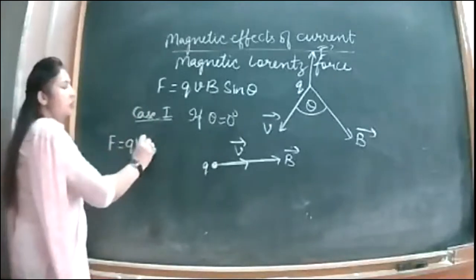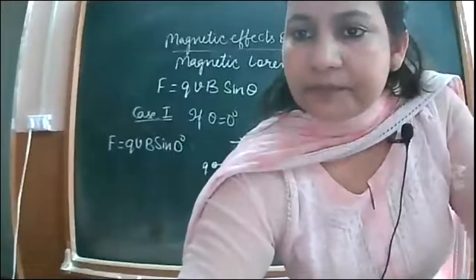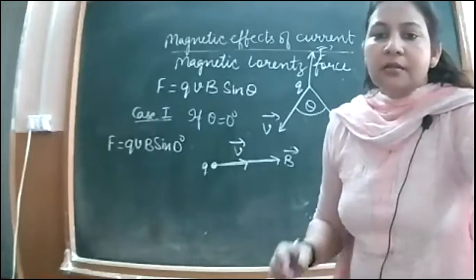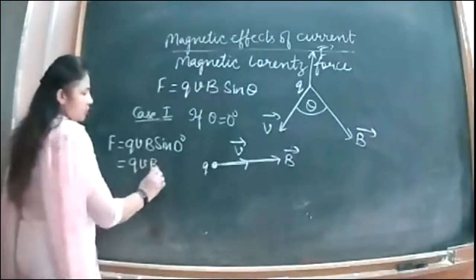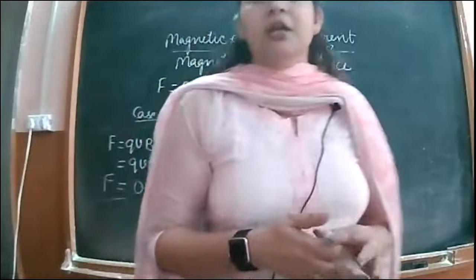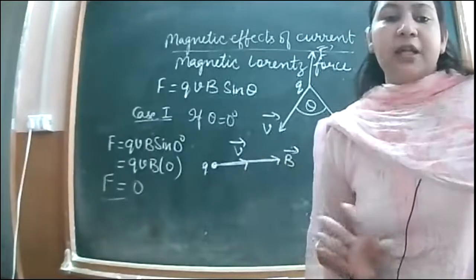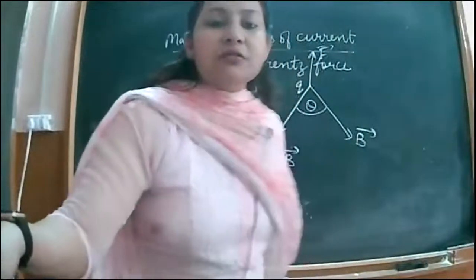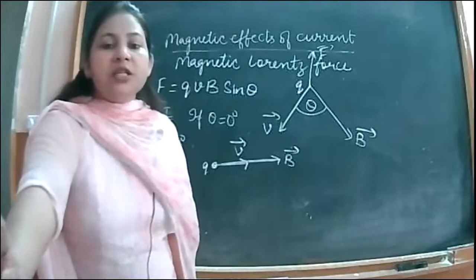What is the value of sin 0°? It is zero. So the force is zero. That means if the charge particle is already moving in the direction of the magnetic field, there is no deflection and no change in its direction — it keeps moving in the same direction as if no magnetic force is acting on it.